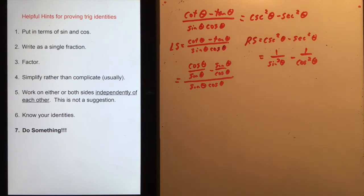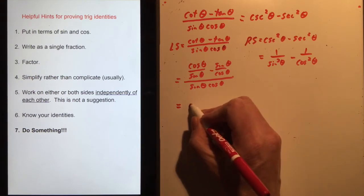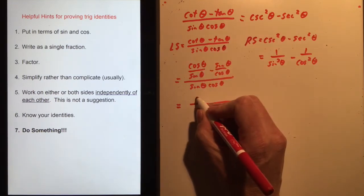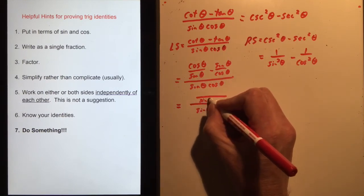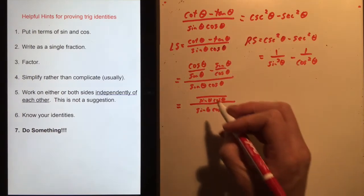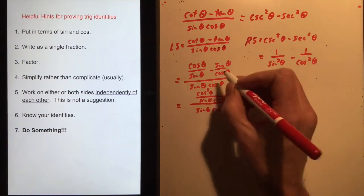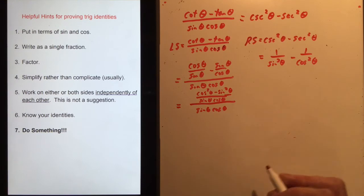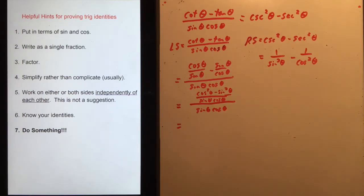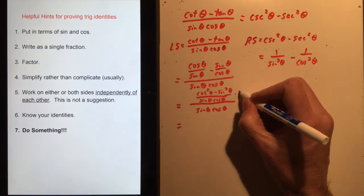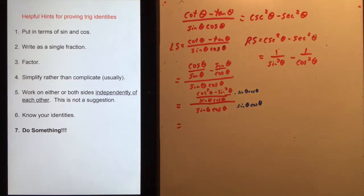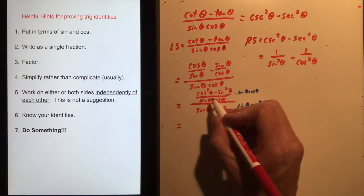Put in terms of sine and cosine — check. Now write as a single fraction. For the big numerator, the common denominator of (cosθ/sinθ - sinθ/cosθ) is sinθcosθ, giving (cos²θ - sin²θ)/(sinθcosθ). Then dividing by sinθcosθ is the same as multiplying by 1/(sinθcosθ). Alternatively, multiply top and bottom by sinθcosθ to clear the compound fraction.